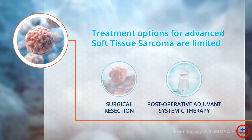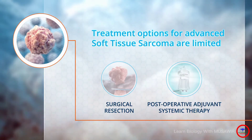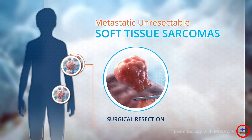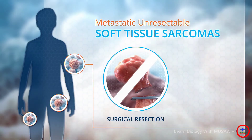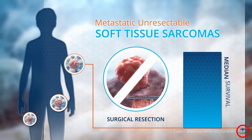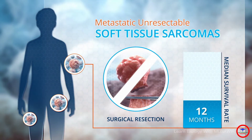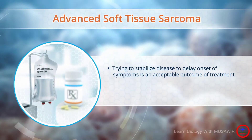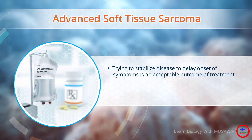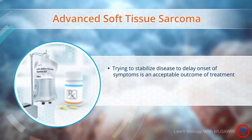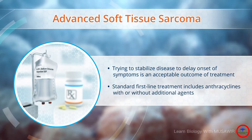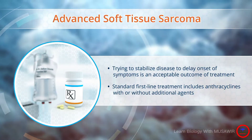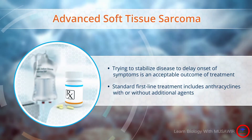Treatment options for advanced soft tissue sarcoma are limited. The prognosis for metastatic or unresectable soft tissue sarcoma is historically poor with a median survival of approximately 12 months. Trying to stabilize disease to delay onset of symptoms is an acceptable outcome of treatment for advanced disease.